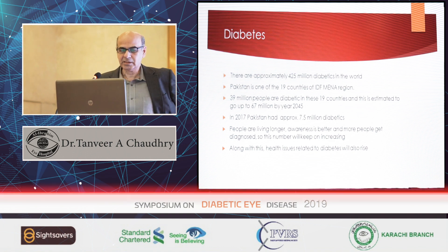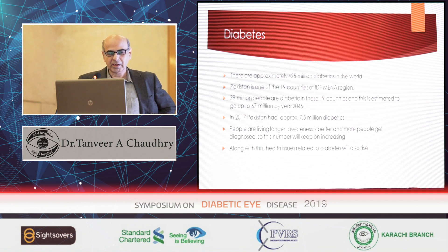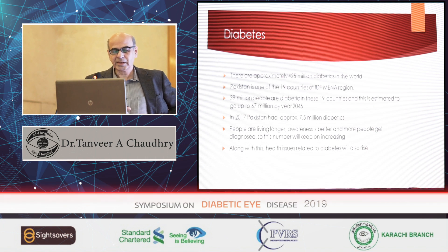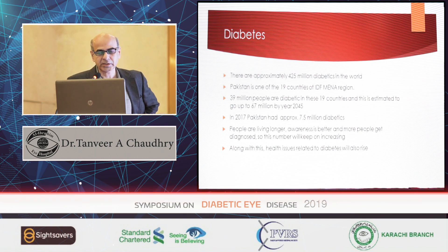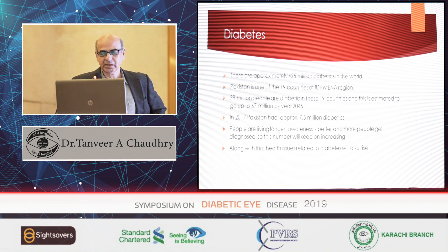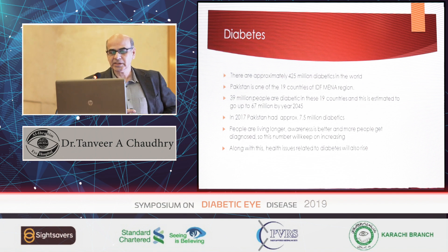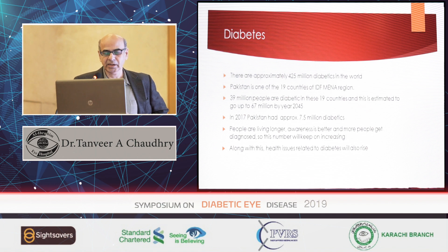Diabetes — I call it not just a disease; it has been talked about a lot. It actually affects every aspect of your body. Nearly 425 million people are diabetic in the world. Pakistan is one of 19 countries defined by the international diabetic federation, in the Middle East and North Africa region.